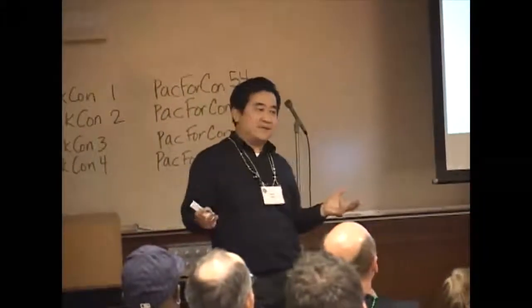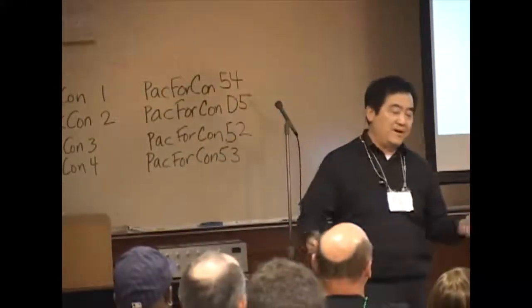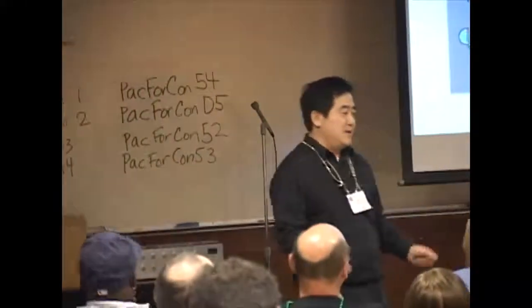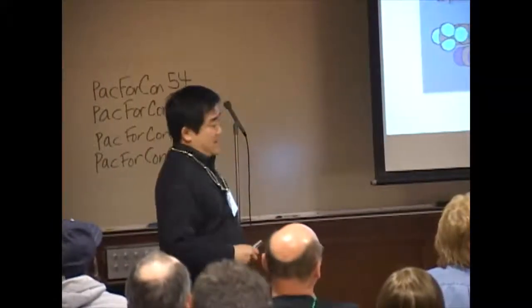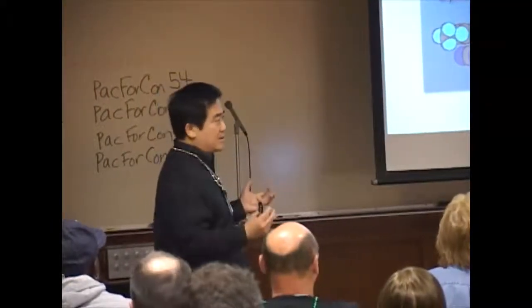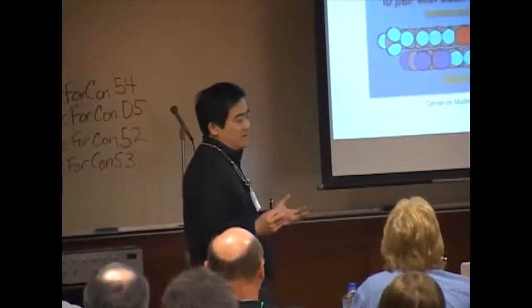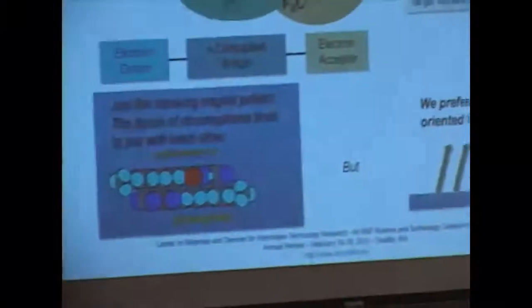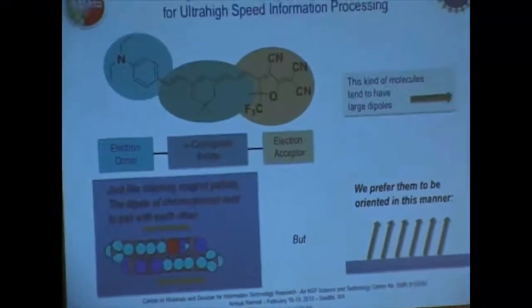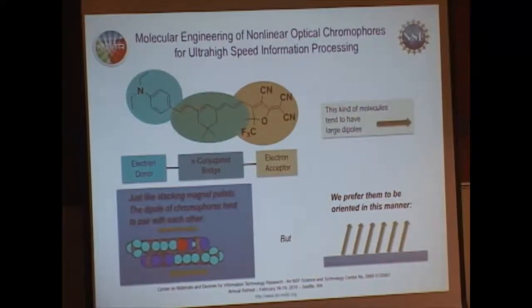I'm not going to touch on this from a purely scientific point of view, but rather give you a brief, down-to-earth introduction about what we are doing. The first step in addressing internet congestion is to provide a solution through molecular engineering — from the molecular level — using nonlinear-optical chromophores to enable high-speed information processing.